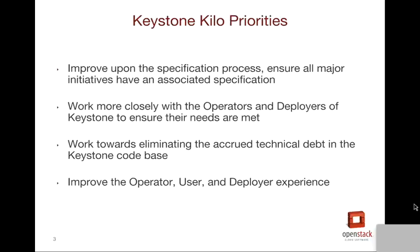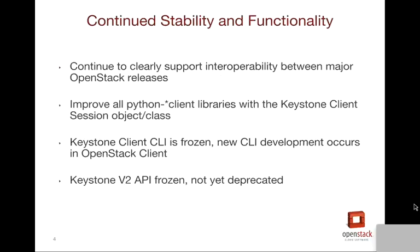We're looking for feedback from all of those different parties, as well as working with those we have a good working relationship with, to make sure that we've made the experience that much better. While we've been good at keeping stability for the Keystone API and configs, we want to continue along those lines. We want to make sure that all the interoperability maintained between major versions of OpenStack releases continues — so you can run older versions of OpenStack with newer versions of Keystone and vice versa, though if you depend on a new feature in Keystone, obviously it won't be supported.